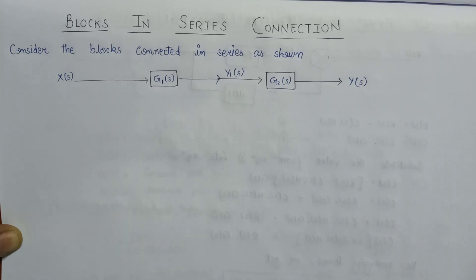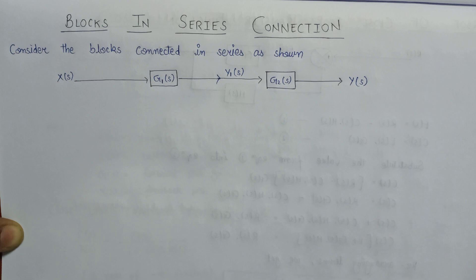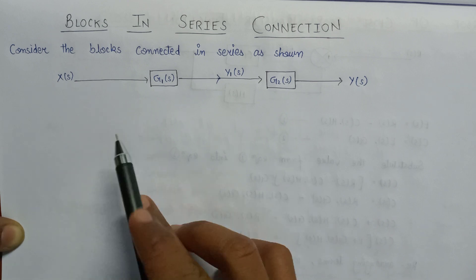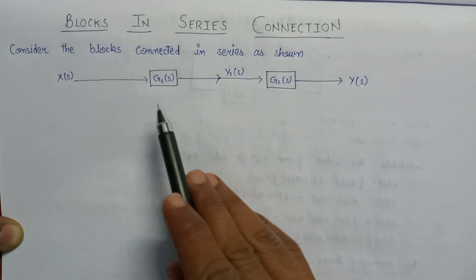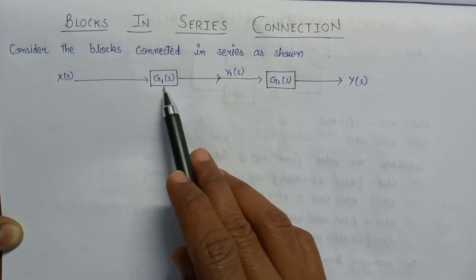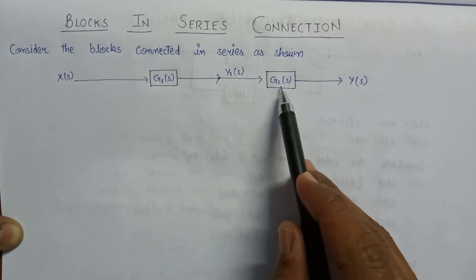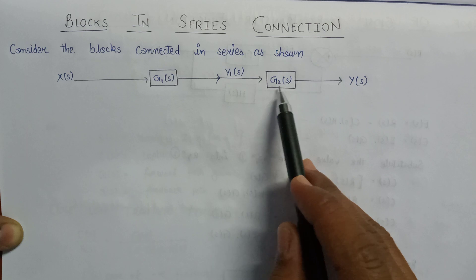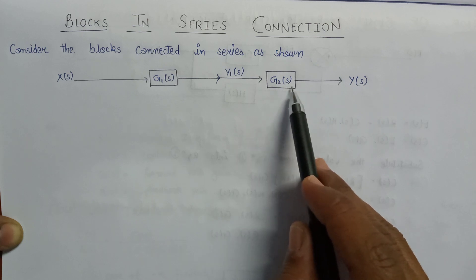Welcome all. In this lecture, we are going to learn about how to solve the block in the series connection. Consider the blocks which are connected in series as shown. Here two blocks are there, having the forward path gain equal to G1(s) and having the forward path gain equal to G2(s).